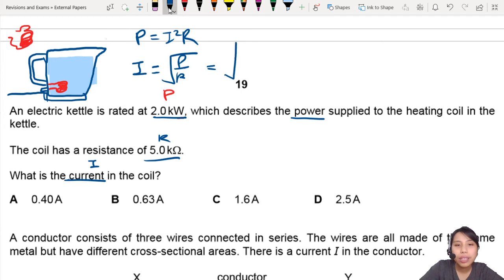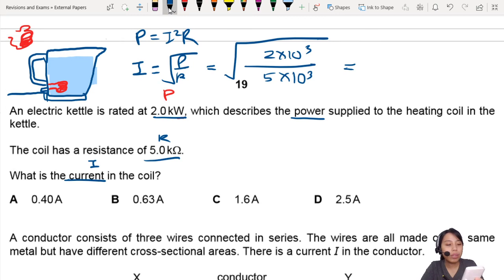Okay, let's calculate. So P will be 2 kilowatts divided by the resistance, which is 5 kilo. Huh, interesting. So the kilo is just square root 2 over 5. And you get 0.63 amps.